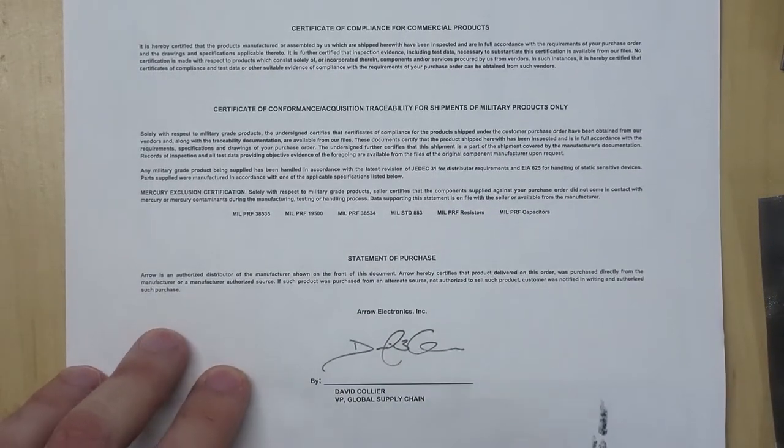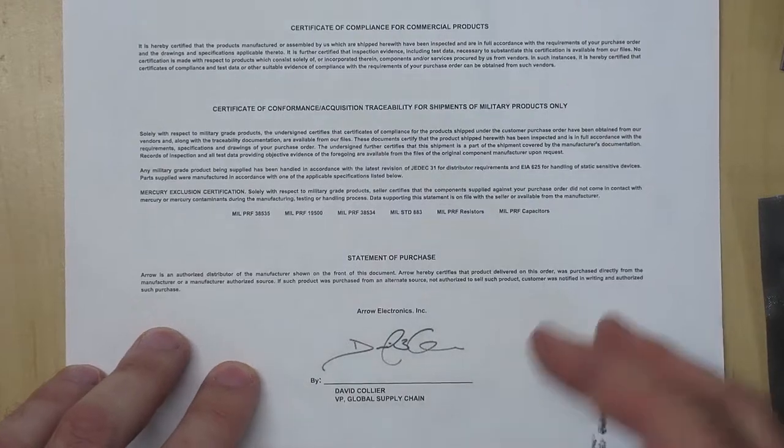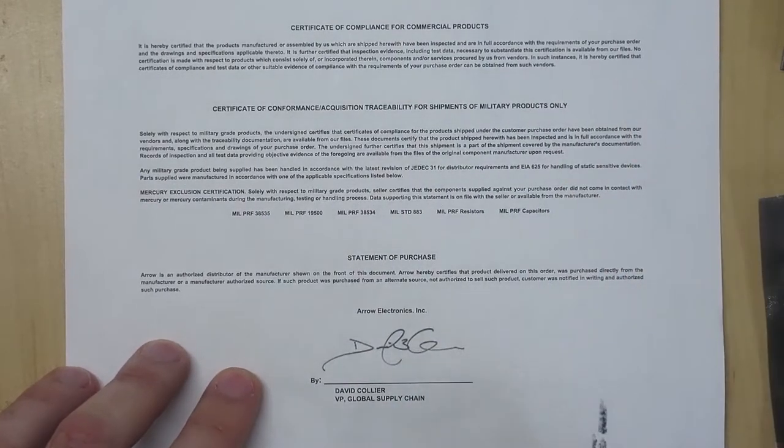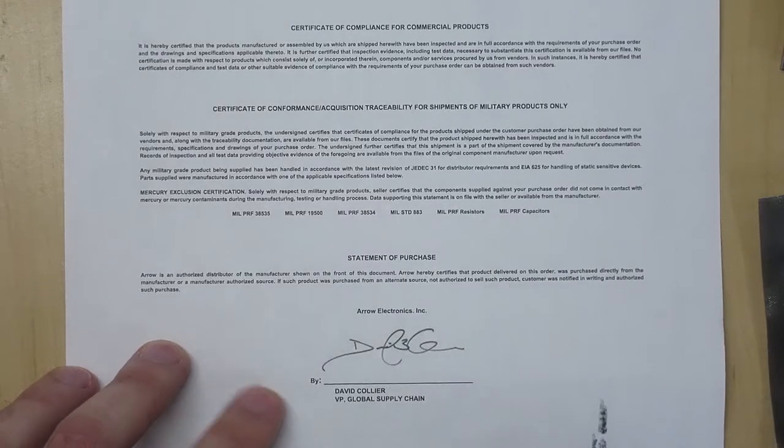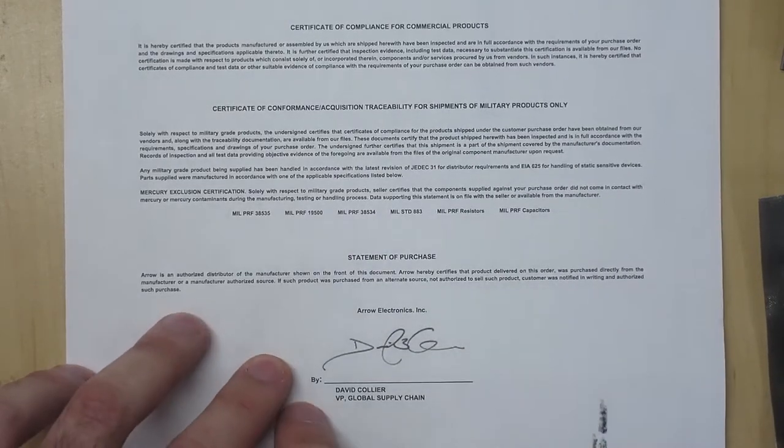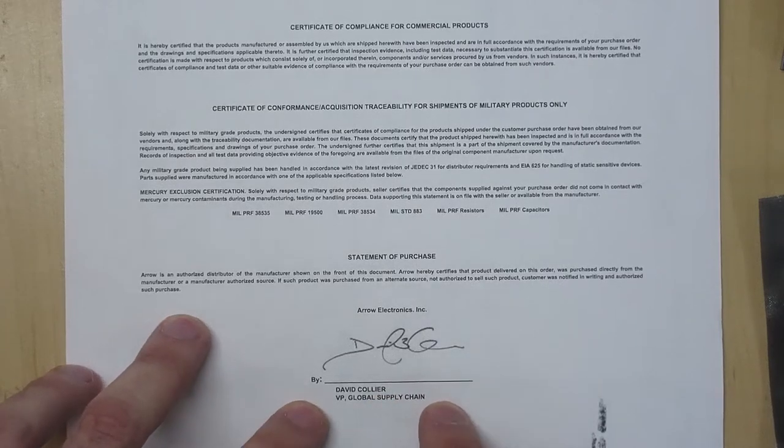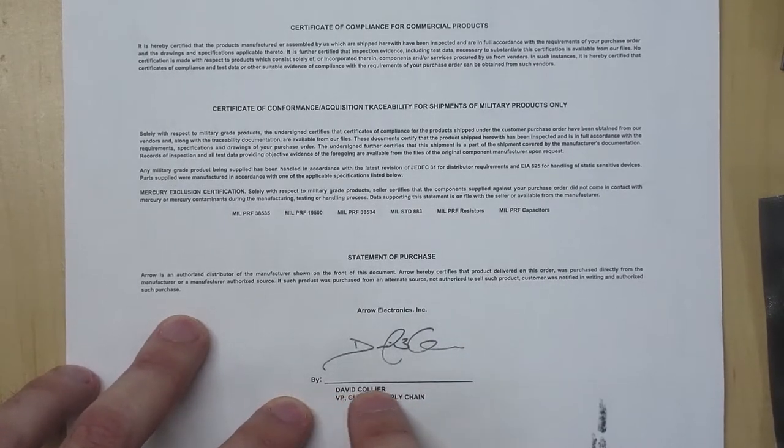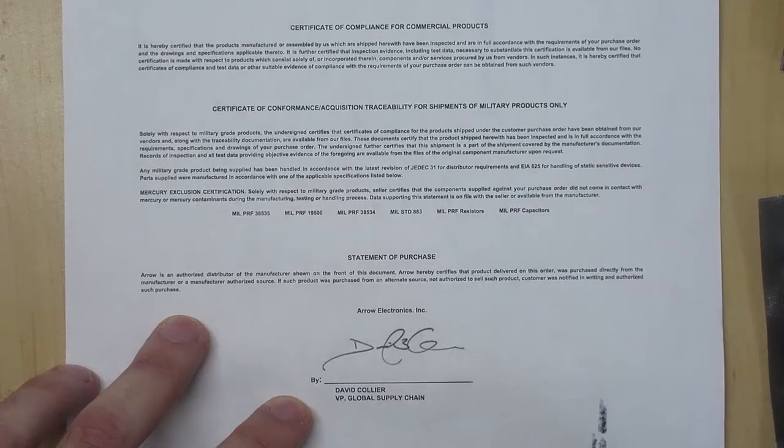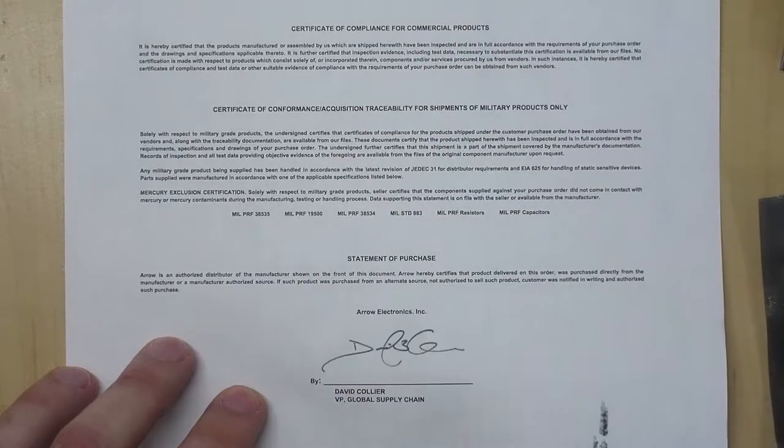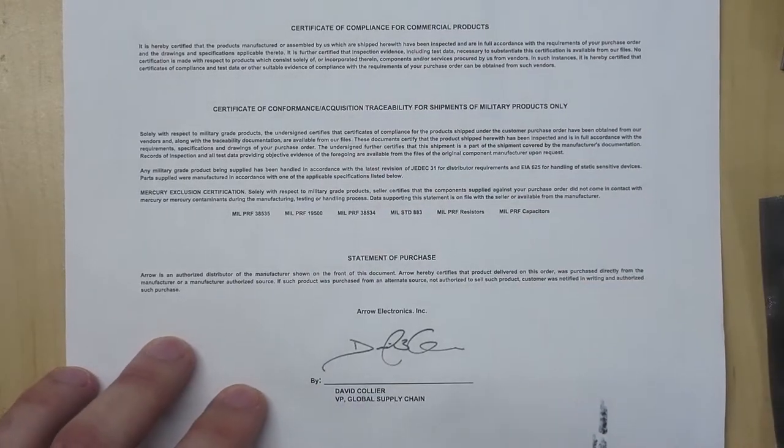And I have some rotary encoders that are from Bourns. Those are Bourns rotary encoders. They're not some knockoff that they bought on eBay because they didn't have the part in stock. I can be assured of that. And it's signed by the VP of the global supply chain at Arrow Electronics, Mr. David Collier. I'm sorry, sir, if I mispronounced your name, it's kind of hard to gauge when we don't meet in person, but this is great that they have these types of certifications.